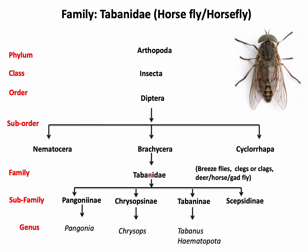Under the Tabanidae family there are four subfamilies: Pangonini, Chrysopsini, Tabanini, and Cepsidini. The important genera include Pangonia, Chrysops, Tabanus, and Haematopota. I will discuss these four genera in this lecture.